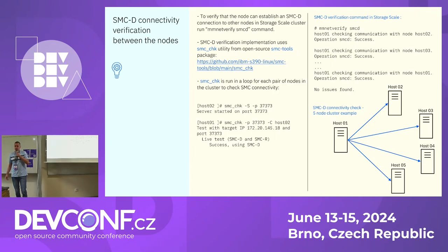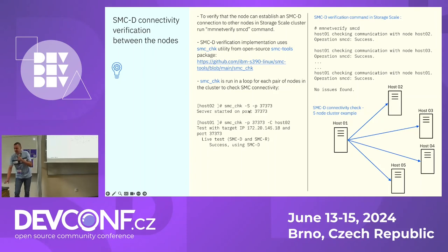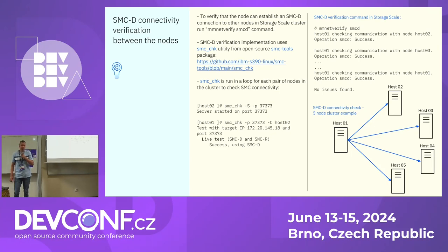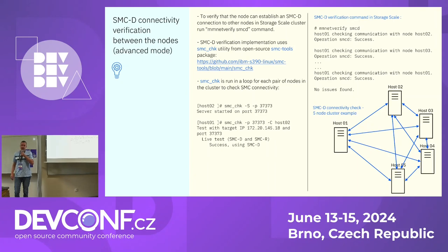To verify connections are truly using SMCD protocol, we use the SMC check command from SMC tools. On the server, we start SMC check with the -s option as a server on the remote host, then make a client connection from our host and confirm it is successful. In case of TCP fallback, an error is reported. There is also an advanced mode where all nodes check connections against every other node, using different port numbers so all connections run in parallel.